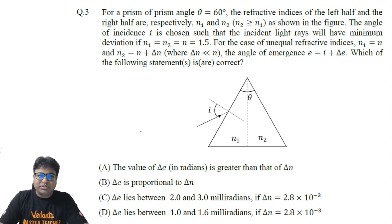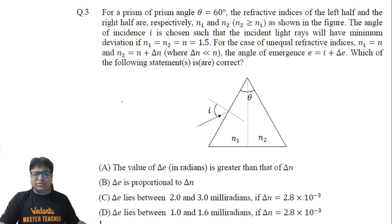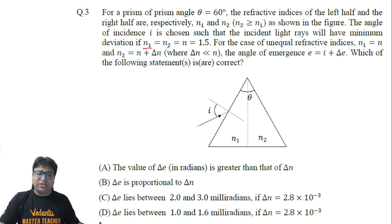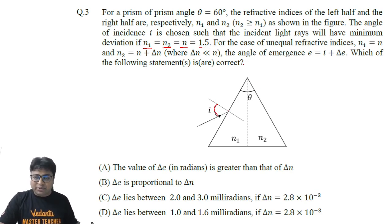Hello students, this is question number 3 of Physics Paper 2 of 2021 JEE Advanced. This is an interesting question — one such question appeared in previous year papers, maybe 2019. The question says there is a prism which is half made of material with refractive index n1 and the other half with refractive index n2. We are considering the case when n1 = n2 = n = 1.5, and we chose an angle of incidence that gives minimum deviation under these circumstances.